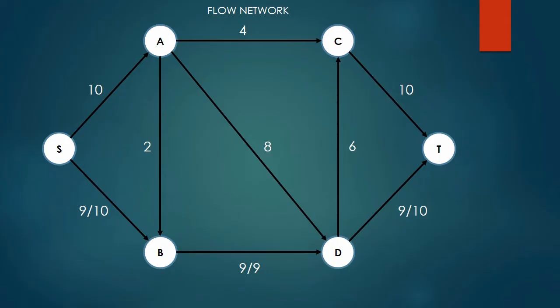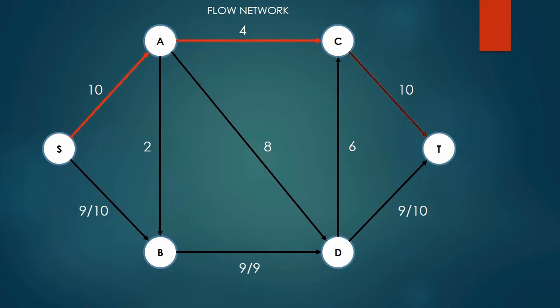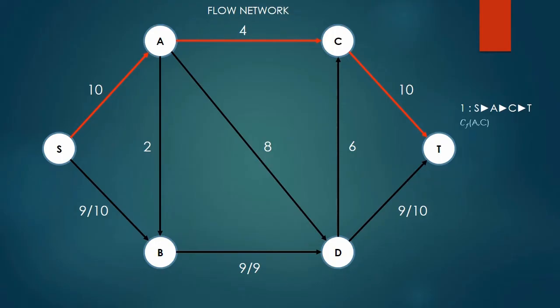Now we choose the next shortest path with available capacity. For this case, we have S to A to C to T. We look at all the edges and find the minimum weighted edge, which is also the maximum capacity of this path. In this case, it is the edge A to C, which has a maximum flow of 4.